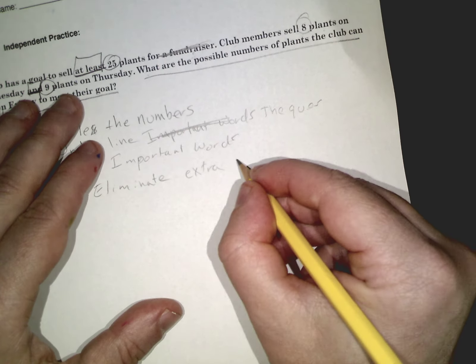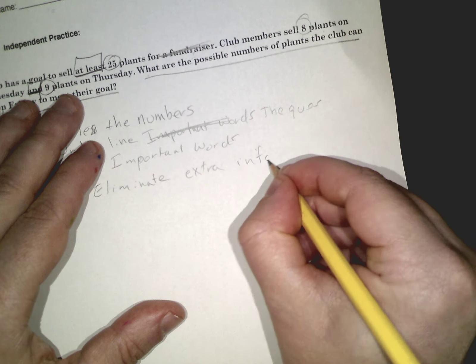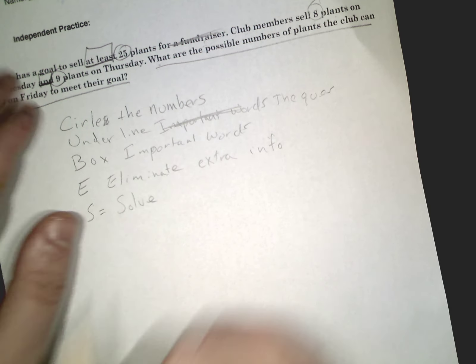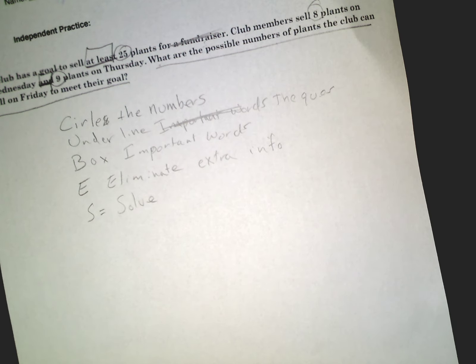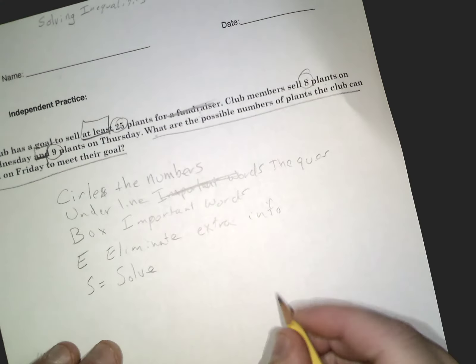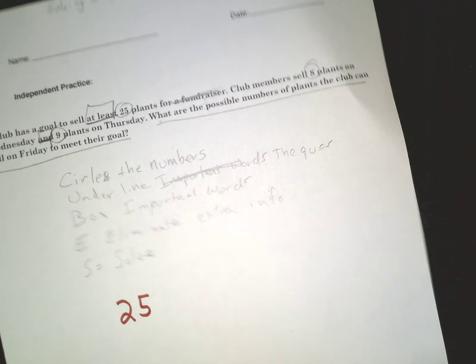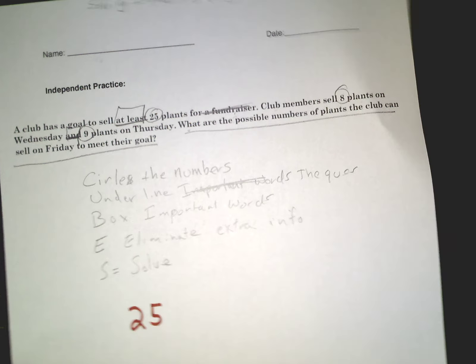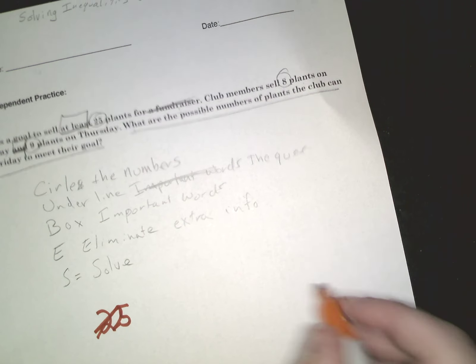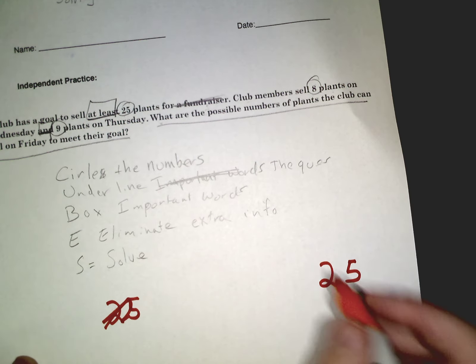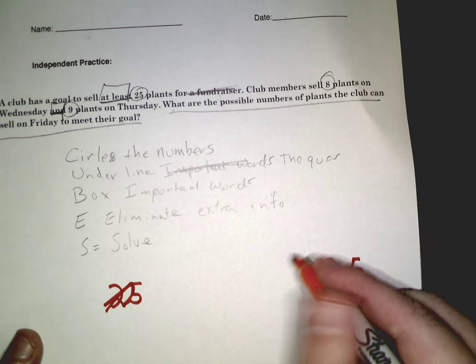Extra info. And then finally S: solve. I think we can do this. So our goal, our answer, is 25. I'm gonna put this over here. This side is what we want, this side is what we're going to do all the work.